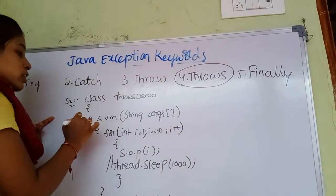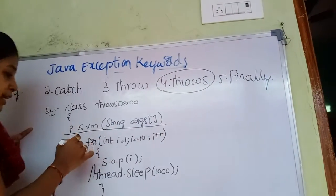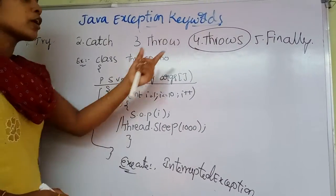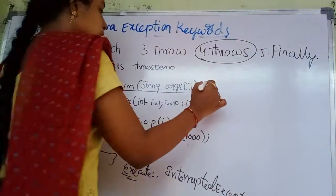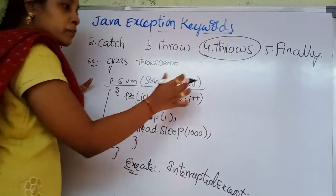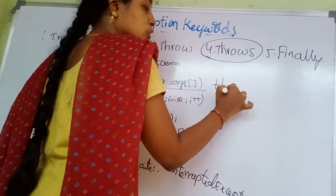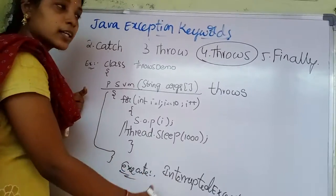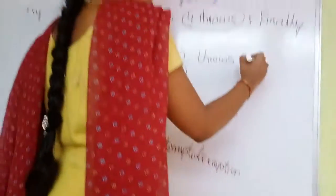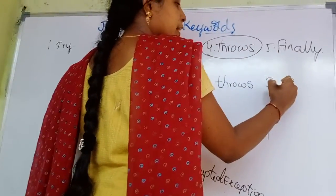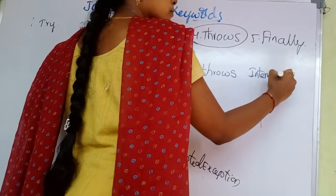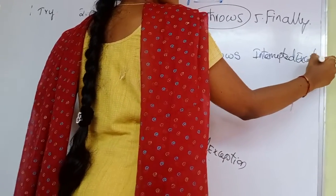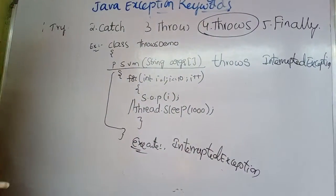If the throws keyword is used, the exception is resolved and the program will execute properly. The syntax is: after the method name, write the throws keyword, and then write the exception name - in this case, InterruptedException. The error will be resolved.